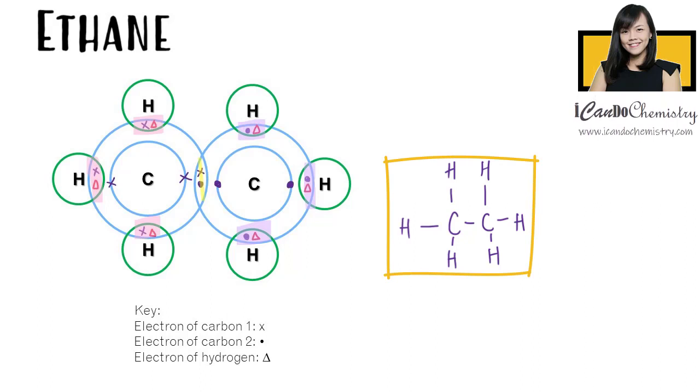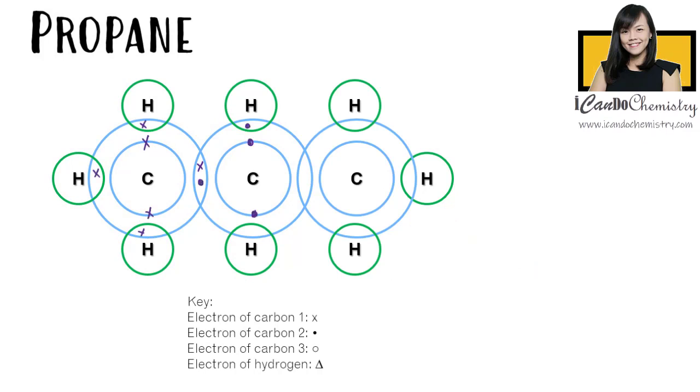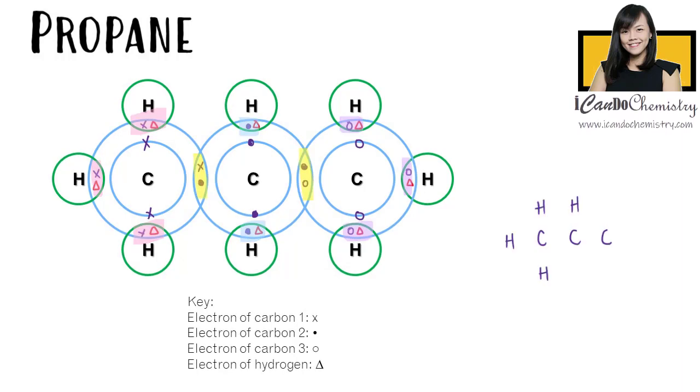What about propane? Propane has three carbons and eight hydrogens. This is the dot and cross diagram of propane. All three carbons share electrons with one another. Then each carbon shares the remaining electrons with hydrogen. We then replace each electron pair with a bond, and we have achieved the structure of propane.